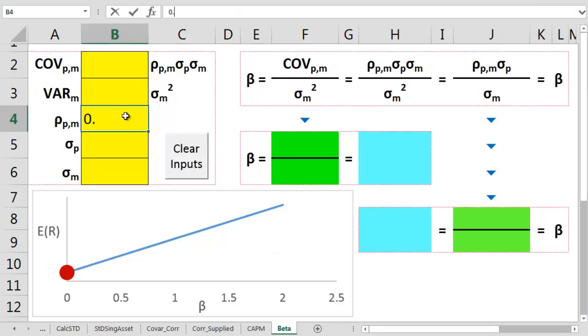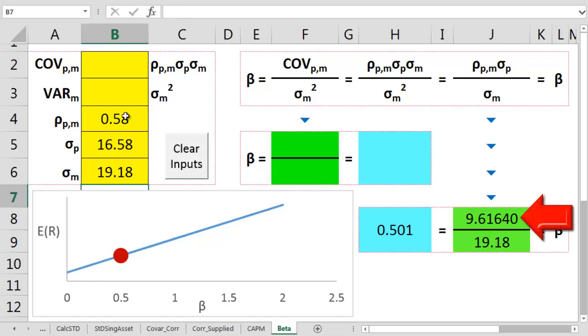So we input 0.58 for the correlation, 16.58 for the portfolio standard deviation, and then 19.18 for the market standard deviation. Here we've multiplied the correlation with the portfolio sigma, or standard deviation, to get to the top number in this equation.